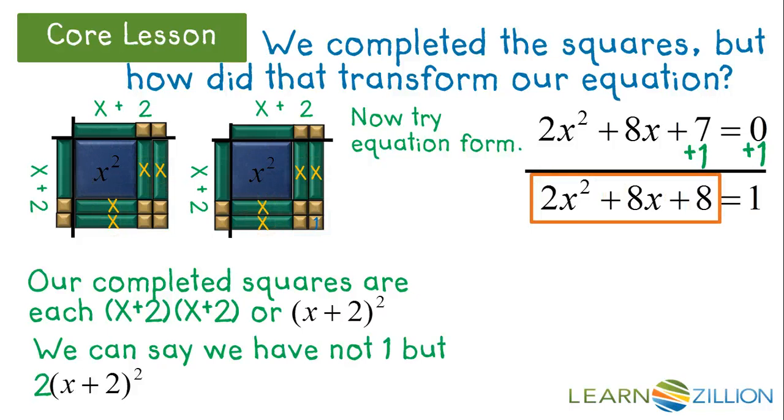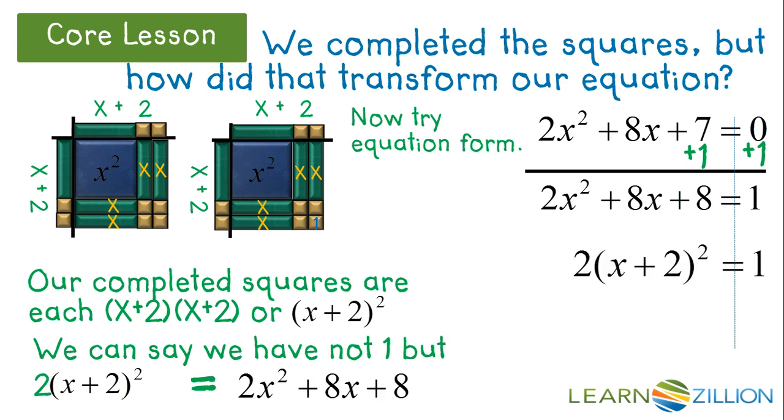So, we can also say these 2 equations are equal. So, I can rewrite the problem as 2 groups of x plus 2 squared equals 1 transformed.